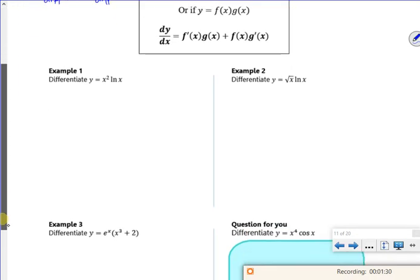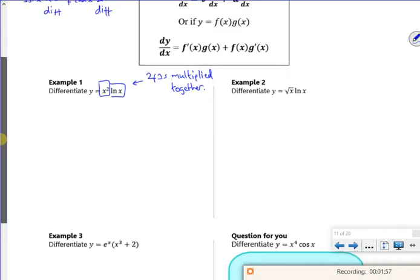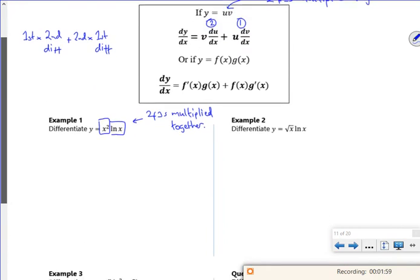Right, so let's have a look at this then. Always with these, box your functions. Make it really clear to you that you know you've got two functions going on. I've got two functions multiplied together there. You've got two functions multiplied together. I could do it with U equals X squared and V equals log X.